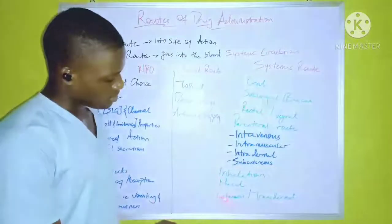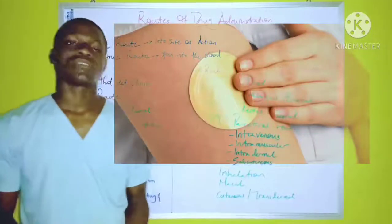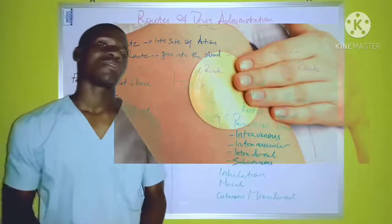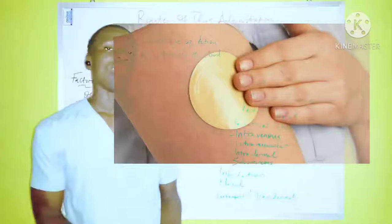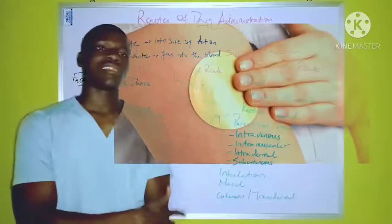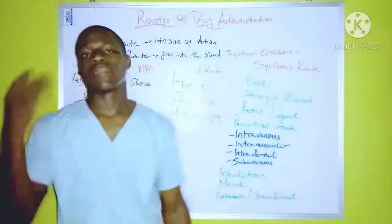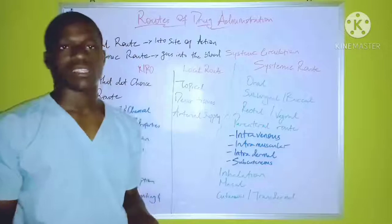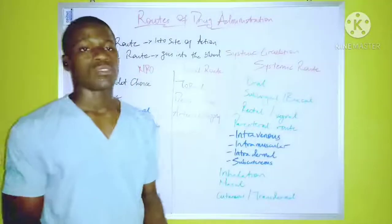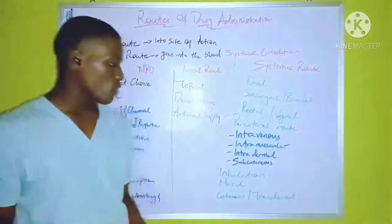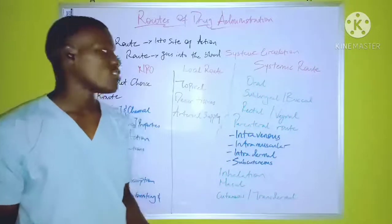The cutaneous or transdermal route involves the application of the drug on the surface of the skin using a transdermal patch. This patch contains a particular dosage of the drug and is sticky, so it stays on the skin when applied. A particular amount of the drug is released into the bloodstream over time in order to maintain a balanced concentration of the drug in the blood plasma. The transdermal patch can stay on for days. An example is a nicotine patch, used for patients who are addicted to nicotine.